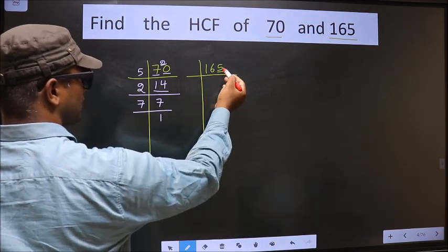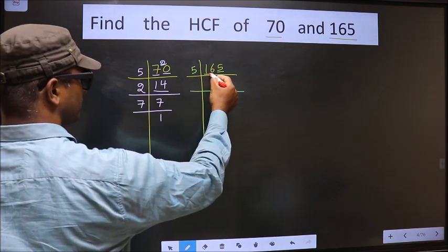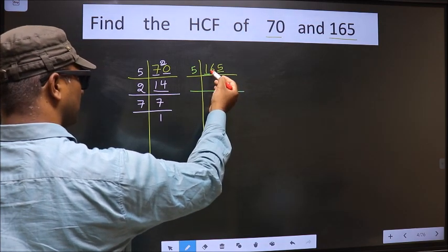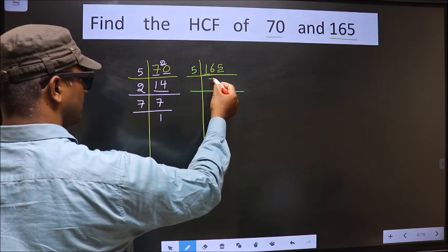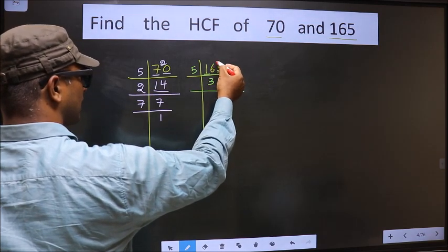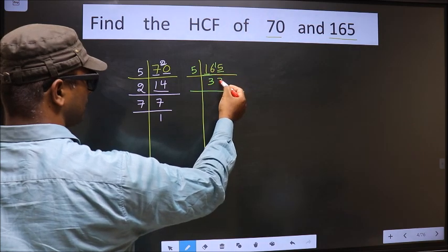For this number, the last digit is 5, so we take 5. The first number is 1, which is smaller than 5, so we take 2 numbers, that is 16. A number close to 16 in the 5 table is 5 threes 15. 16 minus 15 is 1, carried forward making 15. When do we get 15 in the 5 table? 5 threes 15.